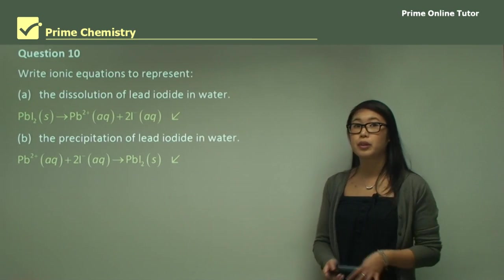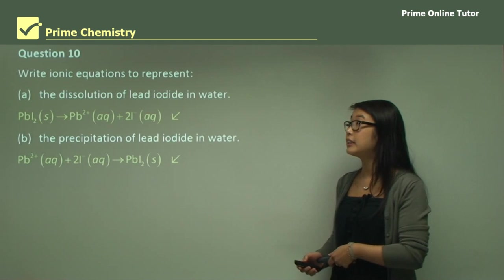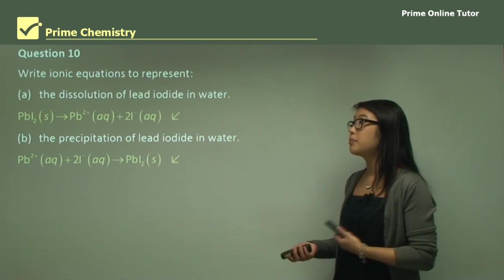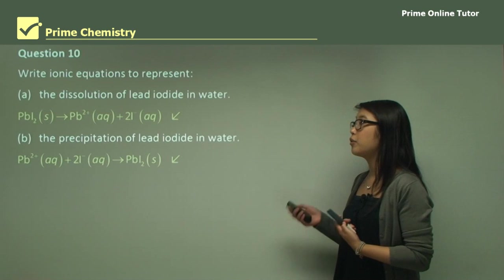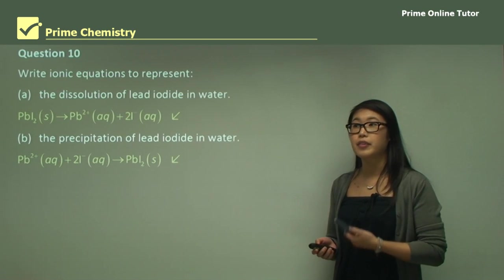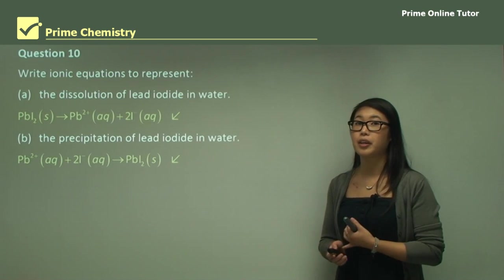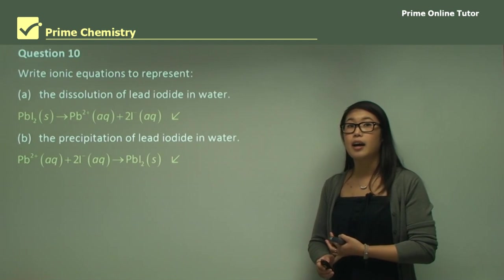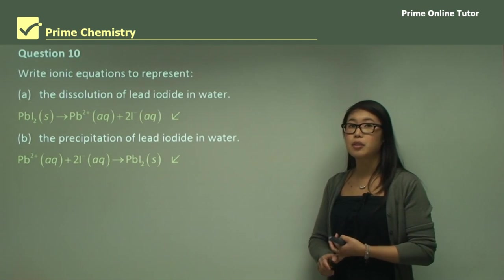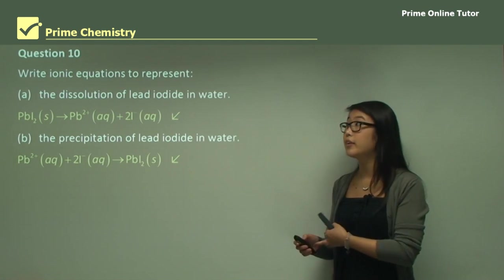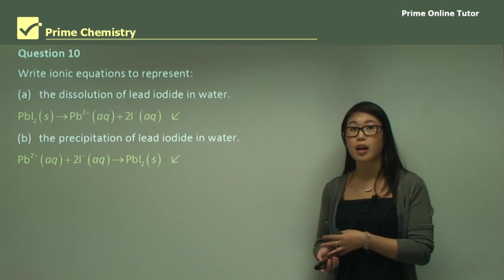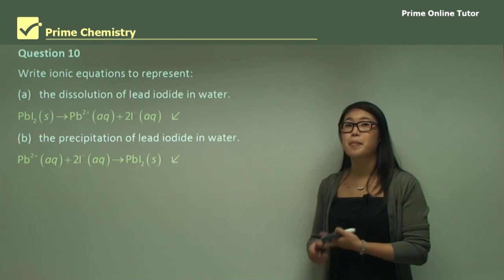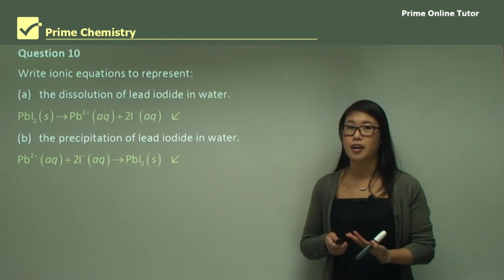In summary, we looked at precipitation reactions and how to write them as ionic equations. Make sure you read the question: if it says net ionic equation, don't include spectator ions; if it's a neutral species or balanced equation, don't include charges or ions; and if it asks for a complete ionic equation, make sure you include all ions involved.